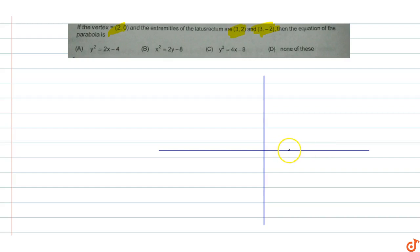The vertex of the parabola is (2,0), and (3,2) and (3,-2) are the extremities of the latus rectum of this parabola. This point is (3,-2) and this one is (3,2), the extremities of the latus rectum. We join them to form the latus rectum.